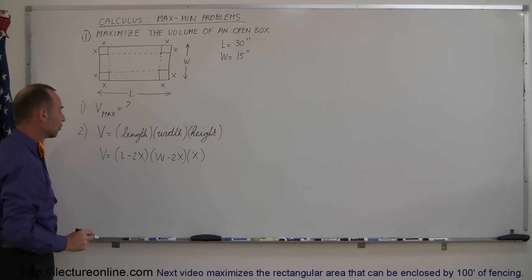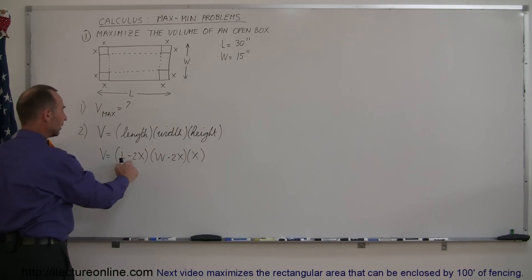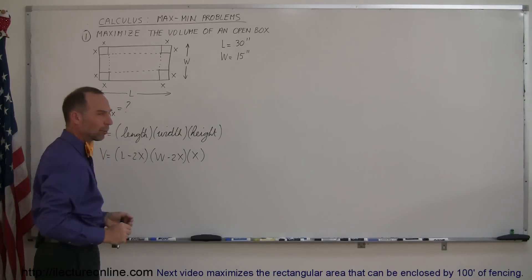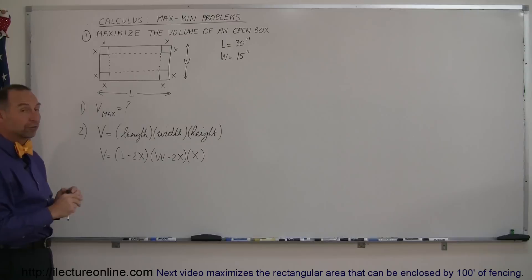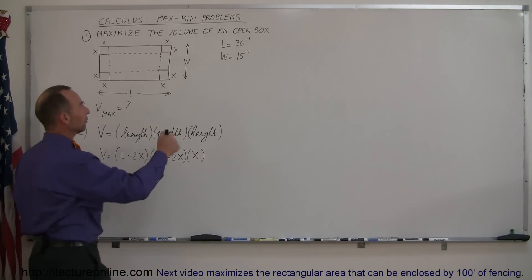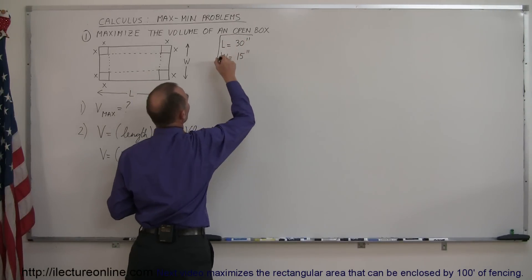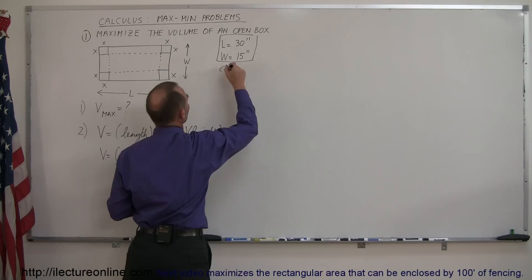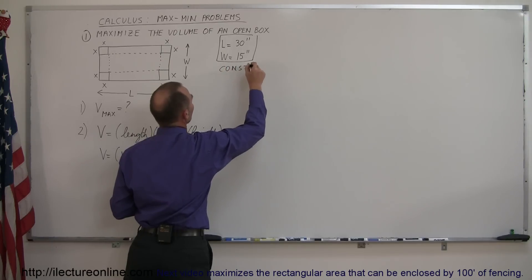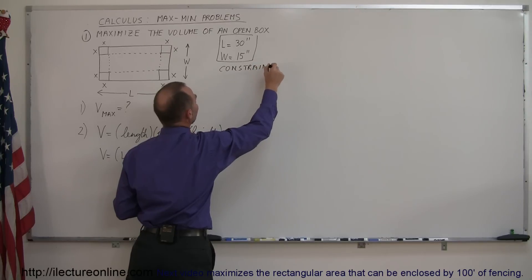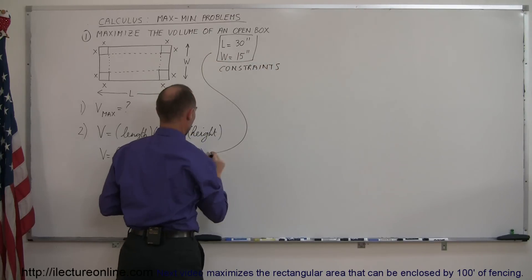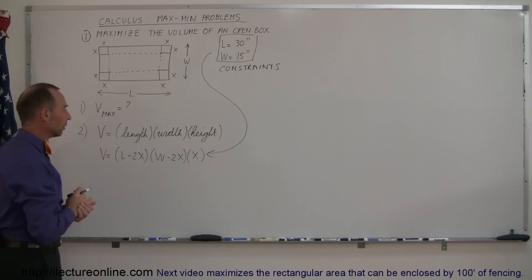Now that we have an equation, we have l, x, and w all in the same equation. Of course we only want a single variable. So now we look for some constraints to let us know what the relationship between these variables are or how to eliminate some of the variables. In this case we're given the length and the width in terms of inches and these are considered in this problem our constraints. When we plug the constraints into our equation, we can eliminate as many of the variables as possible and hopefully we'll just end up with one.